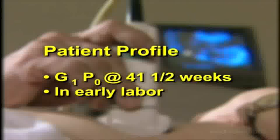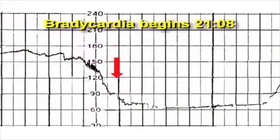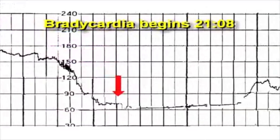Since admission, the patient's fetal heart rate tracing has been uncomplicated with moderate variability, but at 2108, a bradycardia begins and immediately the fetal heart rate drops to a nadir of 60 beats per minute.